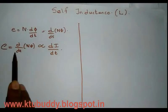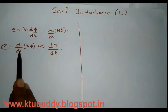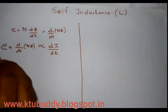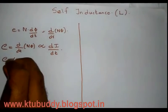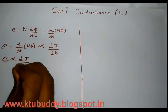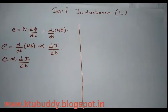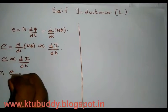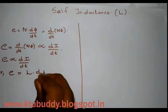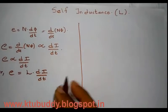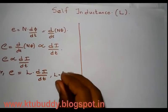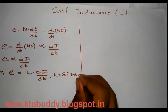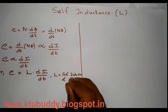We can write the induced EMF as e = d/dt of Nφ, which is proportional to di/dt. From this, we can write that the induced EMF in a coil is proportional to the rate of change of current. That is, e = L·(di/dt), where L is a constant known as the self-inductance of the coil.